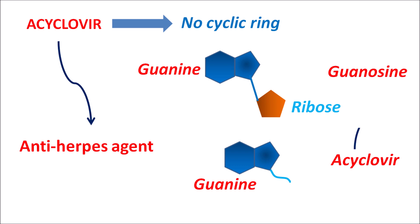Because of its structural similarity with guanosine, acyclovir can replace the function of guanosine within DNA synthesis, but it cannot act like guanosine, so it can inhibit the DNA synthesis. In this way, acyclovir inhibits the function of DNA polymerase, particularly related to deoxyguanosine triphosphate.